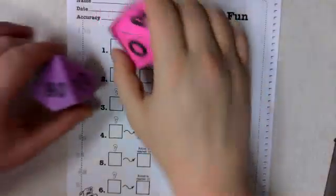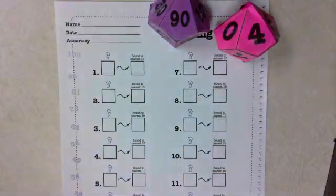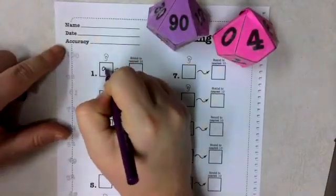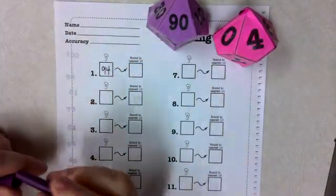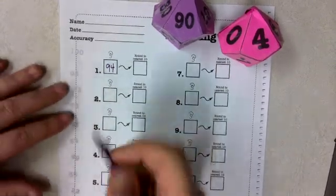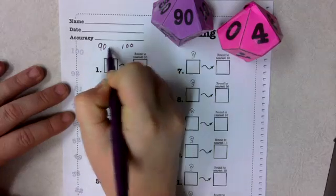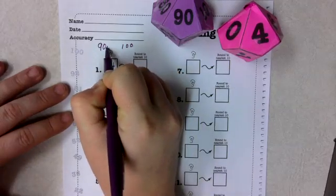Basically, we're rounding to the nearest ten. So I would roll and record. I rolled 94. So I need to record my 94. And then I need to round to the nearest ten. The practice we've done as a class so far is asking ourselves, is it closer to 90 or closer to 100? So what are those two tens that it's between?